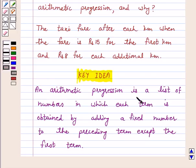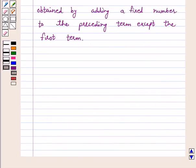An arithmetic progression is a list of numbers in which each term is obtained by adding a fixed number to the preceding term except the first term. Solution.